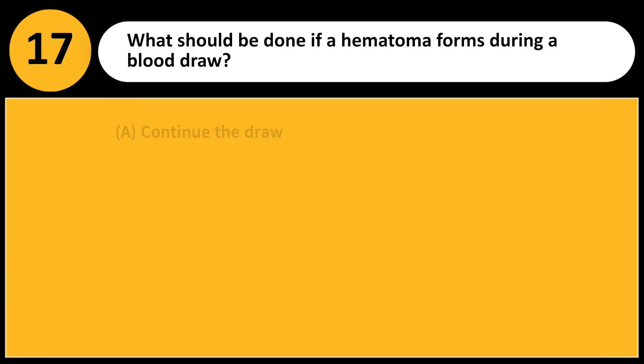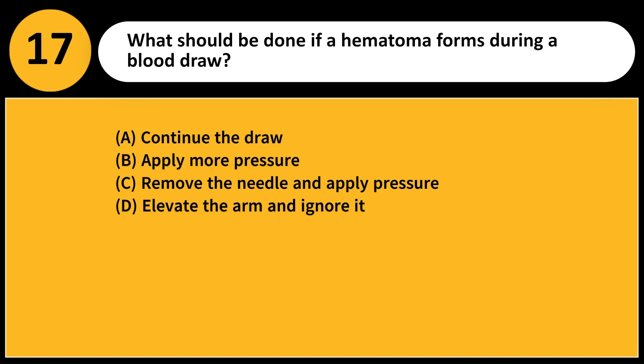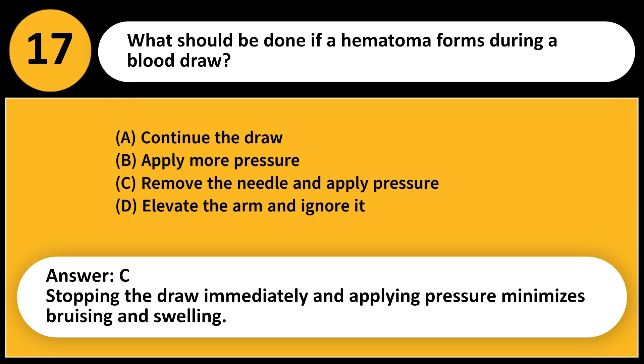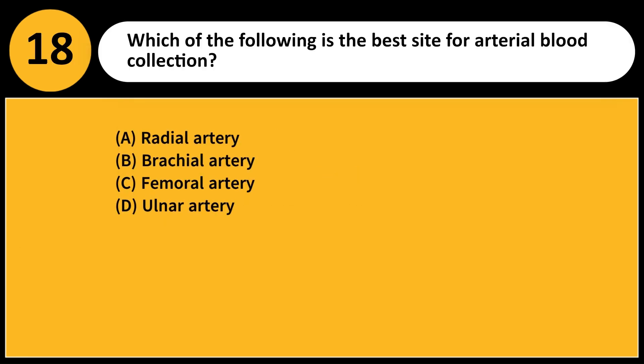What should be done if a hematoma forms during a blood draw? A. Continue the draw. B. Apply more pressure. C. Remove the needle and apply pressure. D. Elevate the arm and ignore it. Answer: C. Stopping the draw immediately and applying pressure minimizes bruising and swelling.